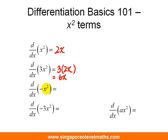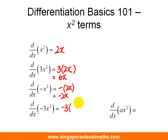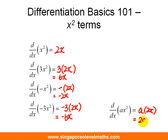By the same logic, if you have a negative x squared, you copy down the negative sign and differentiate x squared to get 2x, giving a final answer of negative 2x. For minus 3x squared, copy down the constant and differentiate x squared to get 2x, so the final answer is negative 6x. In summary, when we differentiate ax squared, the answer is simply 2ax.